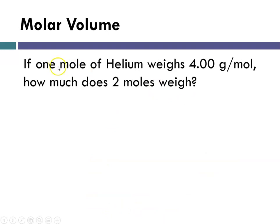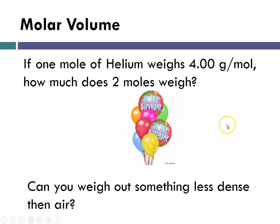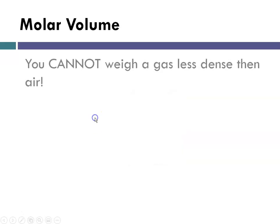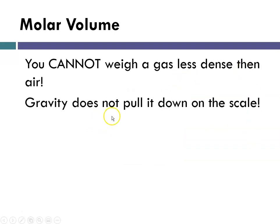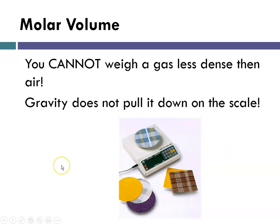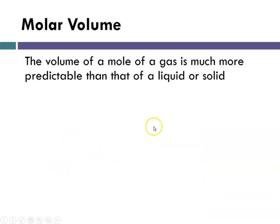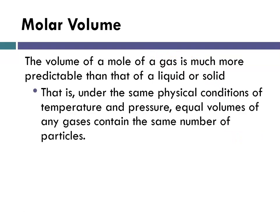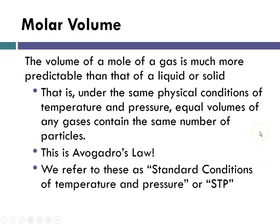Now what about volume? If one mole of helium weighs 4.00 grams per mole, how much does two moles weigh? Well, can you weigh out something that's less dense than air? The short answer is no. You cannot weigh a gas because it's less dense than air, and gravity will not pull it down on your scale. So what do you do with gases? Well, it turns out the volume of a mole of a gas is much more predictable than solids or liquids. And we know that under the same physical conditions of temperature and pressure, equal volumes of any gases contain the same number of particles. Remember Avogadro? So we refer to these as standard conditions of temperature and pressure, and we abbreviate them as STP, standard temperature and pressure.